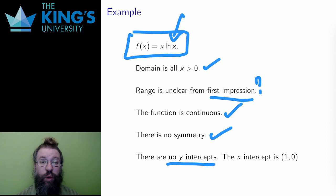I can't try to find a y-intercept, since that involves computing x equals 0, and x equals 0 is not in the domain. I can try and solve f of x equals 0, and the logarithm is 0 when x equals 1, so 1, 0 is the only x-intercept.